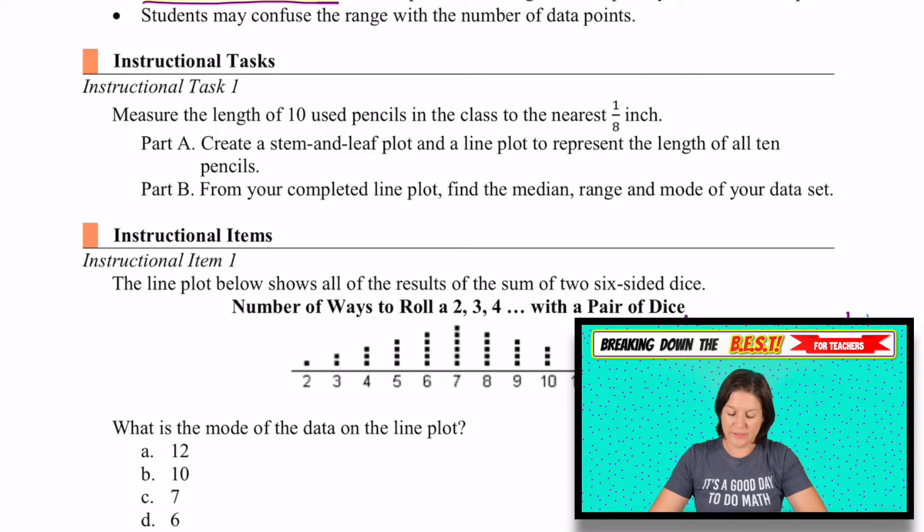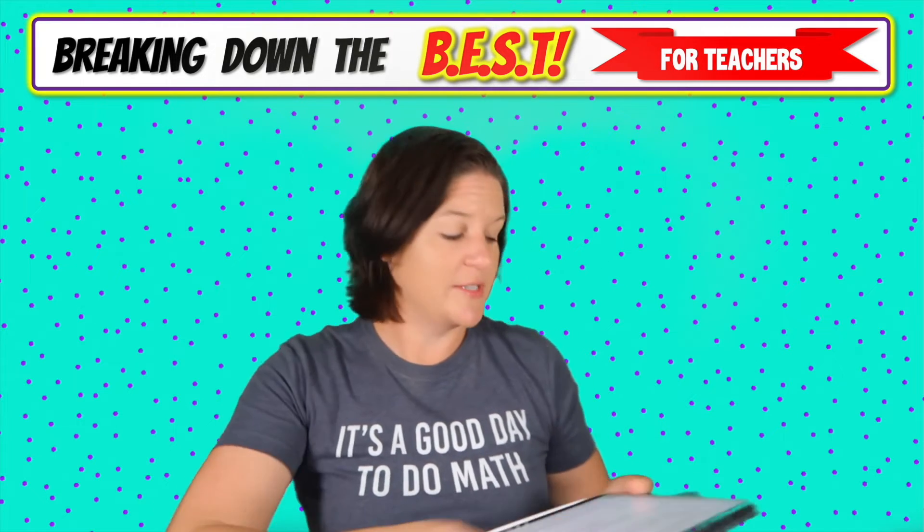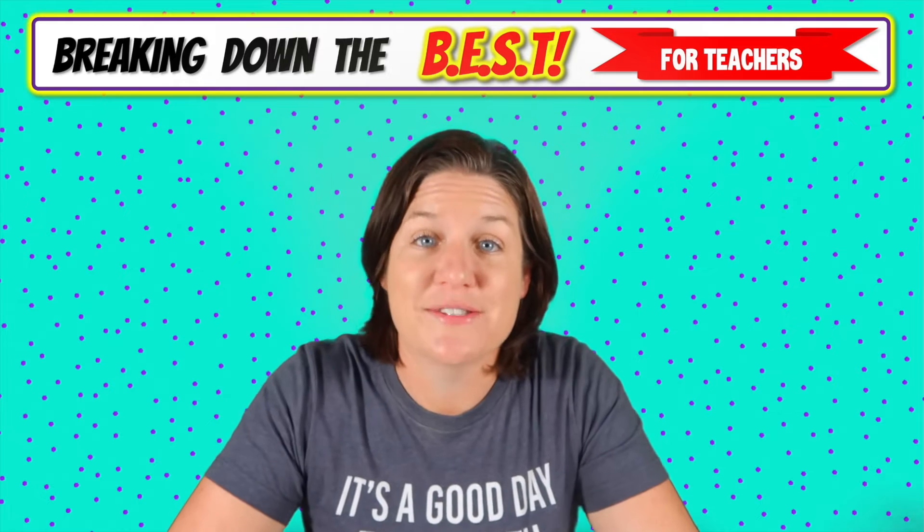Here are some instructional tasks and items so you can see the standard in action. It says to measure the length of 10 used pencils in the class to the nearest eighth of an inch, create a stem and leaf plot and a line plot to represent all of the 10 pencils. And then from that, find the median, the range, and the mode if there is a mode in the data. Notice that this is a line plot without X's. It has dots. Here it's just saying what is the mode? And that would be right here with the 7 because it appears the most. I think that's it for going over this standard. Let's go ahead and hop over to the website and see what you have access to with your Taking on the Best membership.